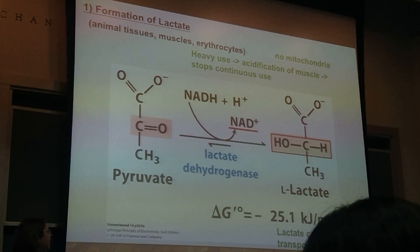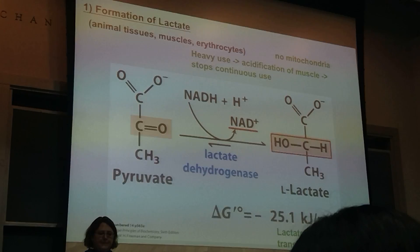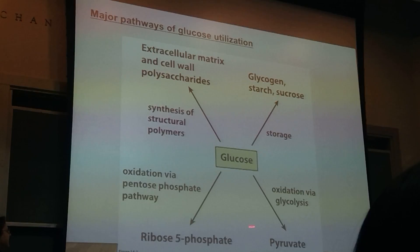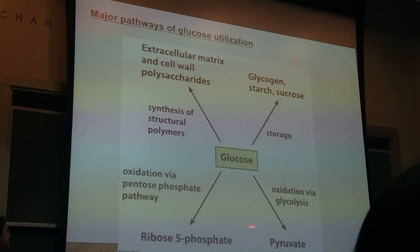This lactate can actually be transported to the liver, and we're going to see in a minute that it can be metabolized to make more glucose. So we talked about glucose being oxidized via glycolysis to pyruvate, which can go to the TCA cycle — which we have not talked about yet — or go to ethanol or to lactate.